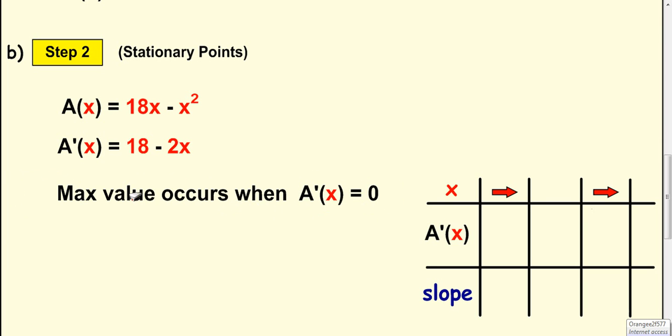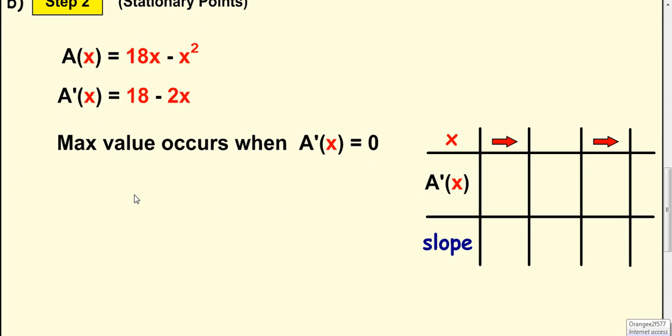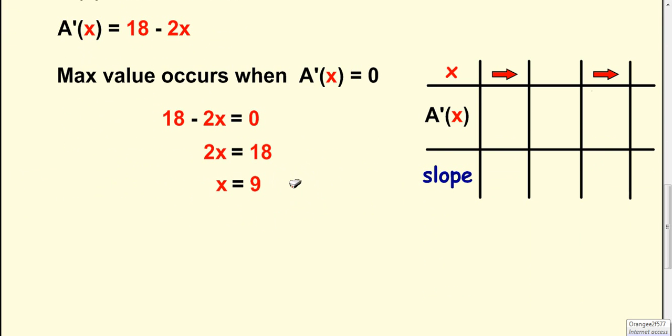So you let this here equal 0. Take the 2 over the other side, the 2x. So 2x is 18. And divide by 2 gives you 9.